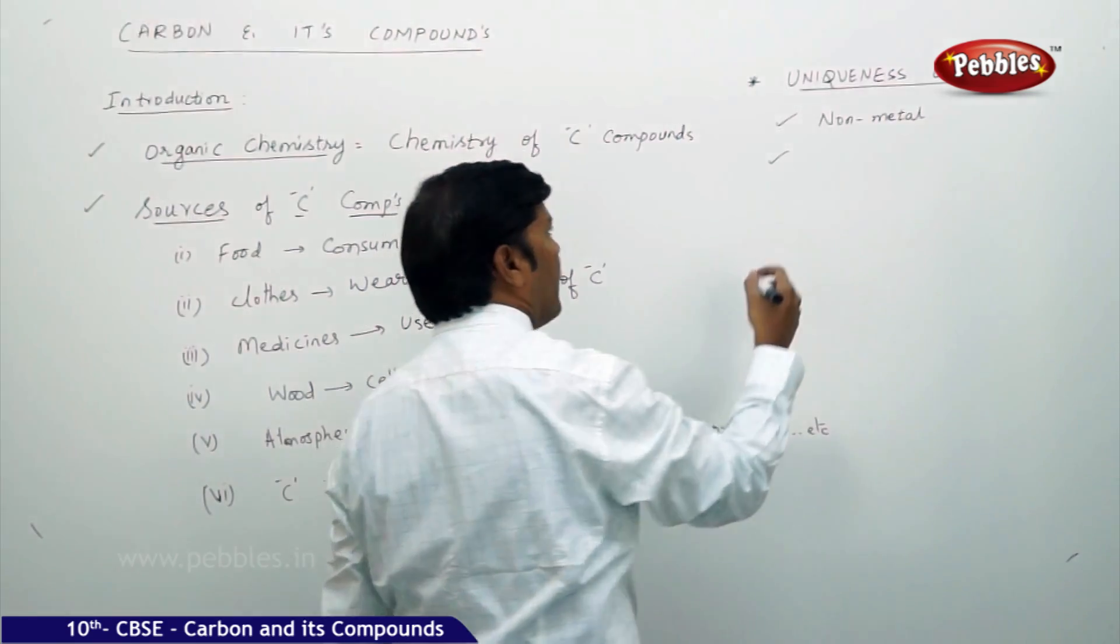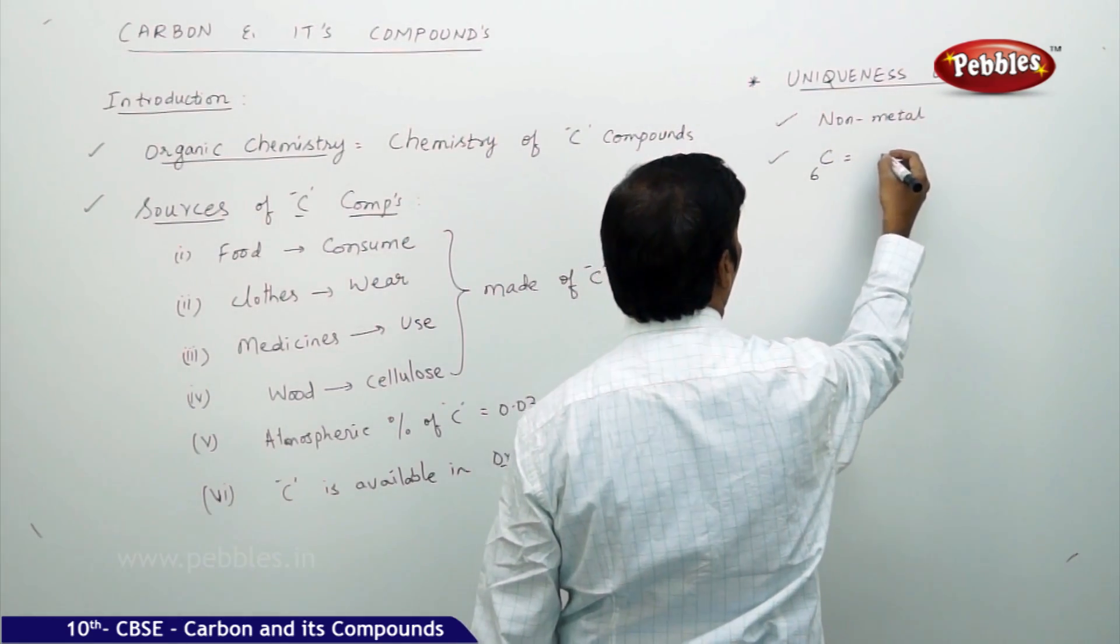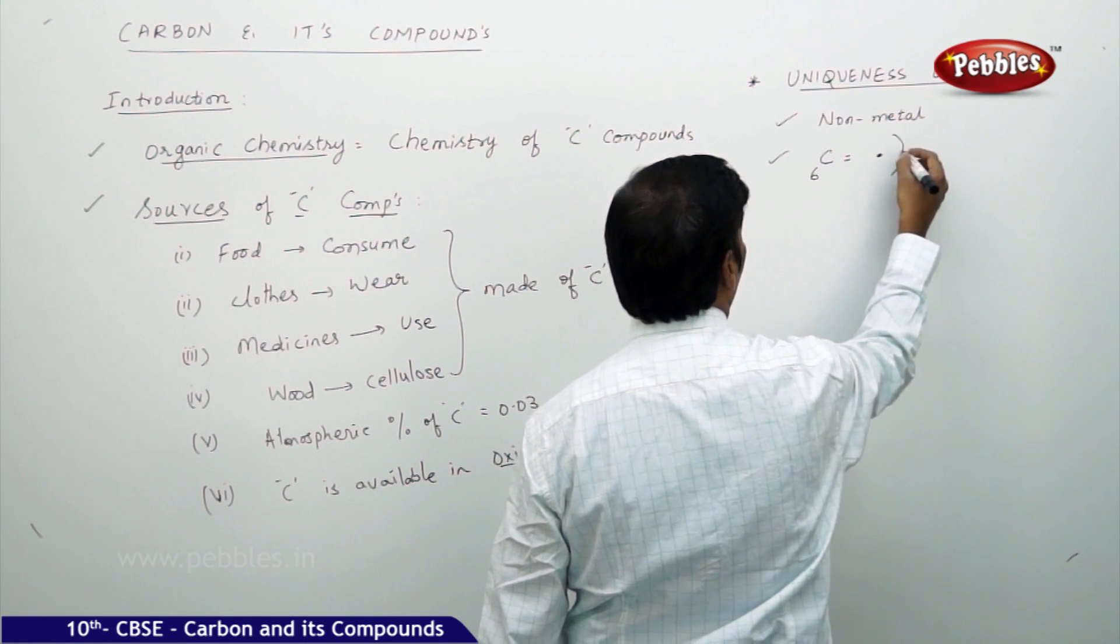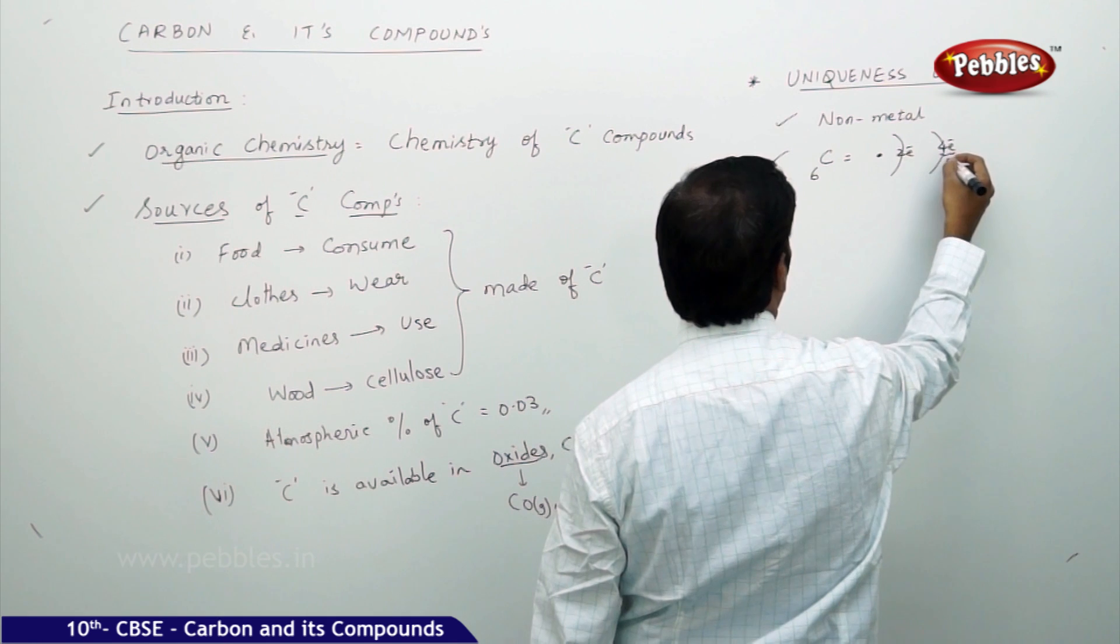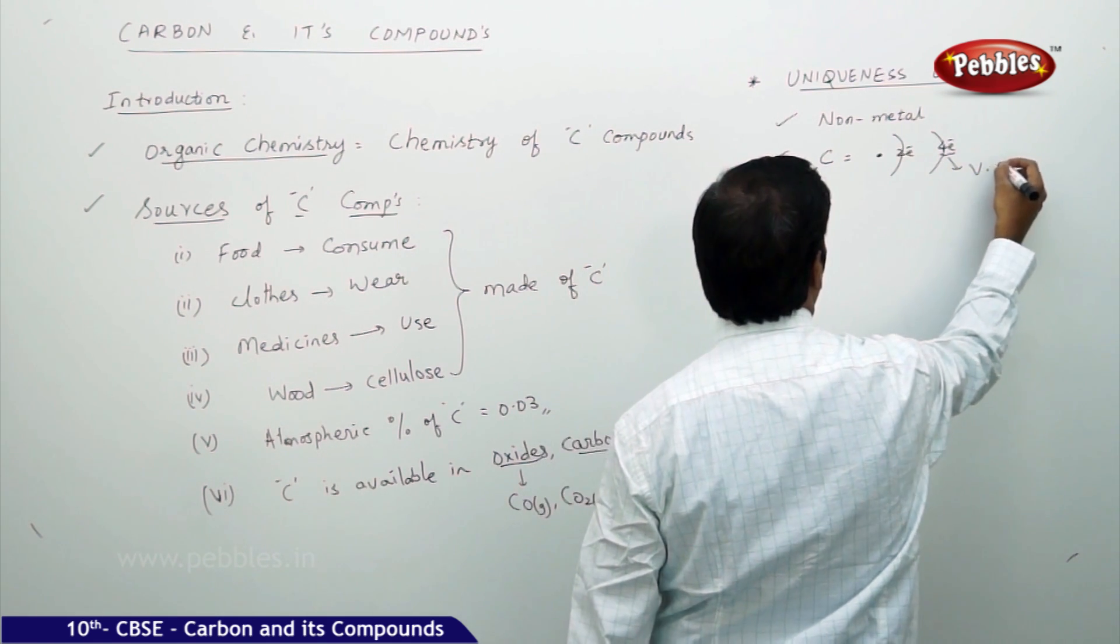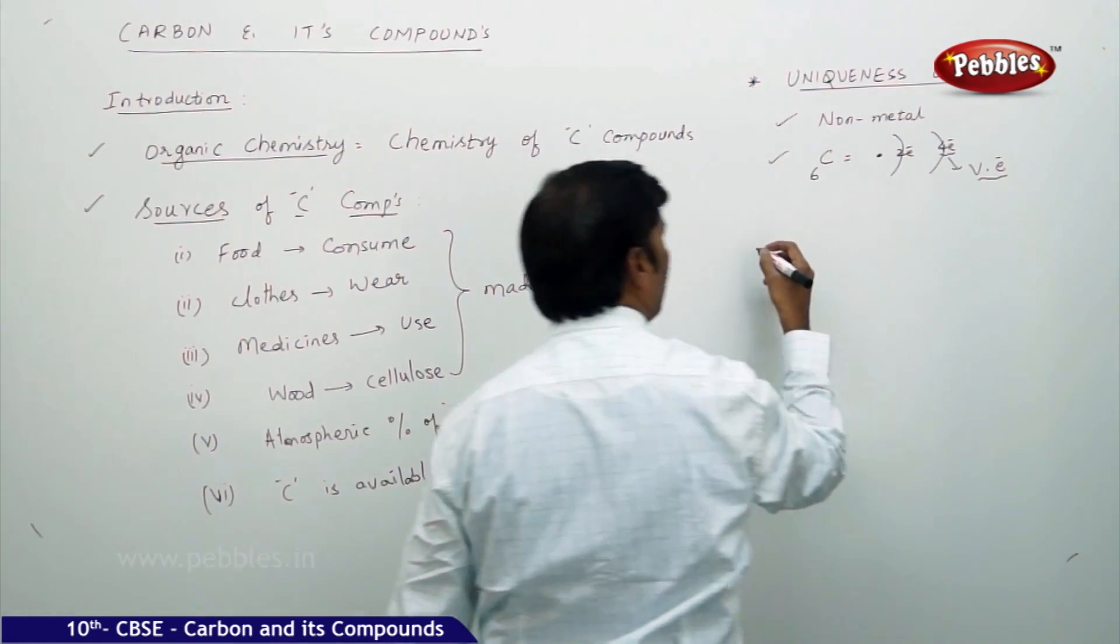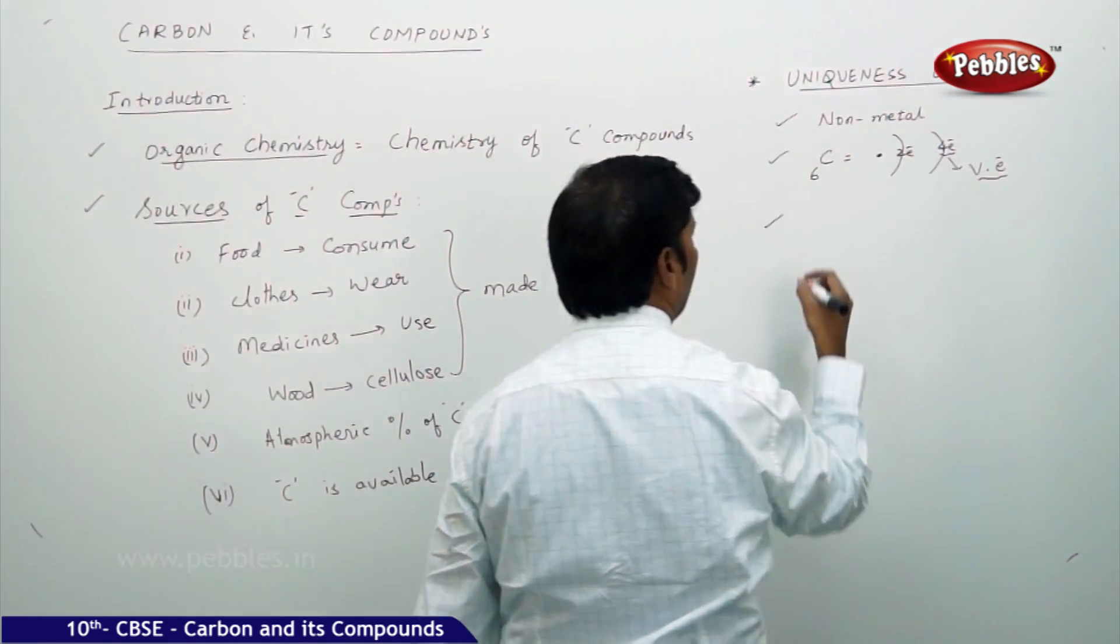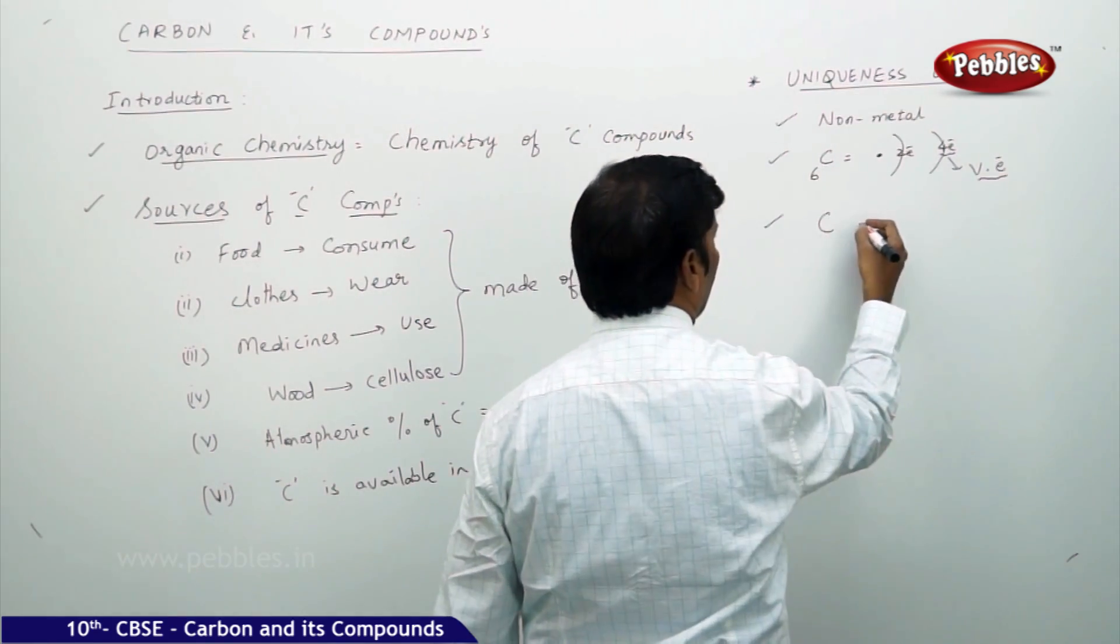If you take carbon, atomic number is 6. If you consider this as nucleus, first shell has 2 electrons, second shell has 4 electrons. These 4 electrons are called valence electrons.